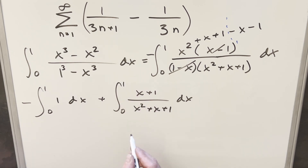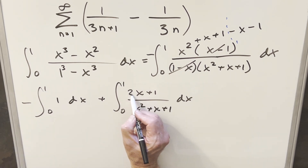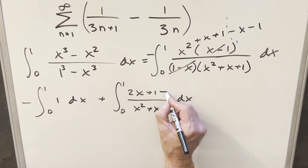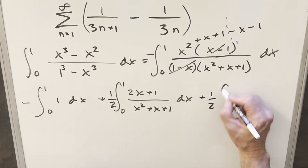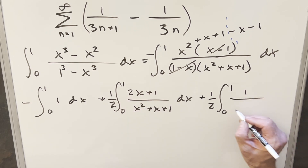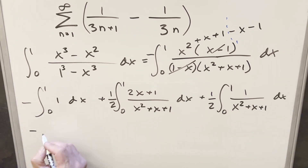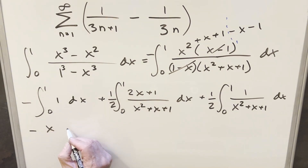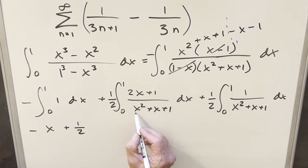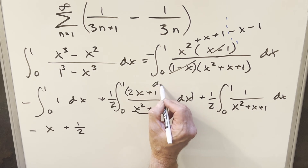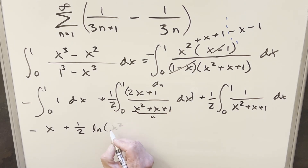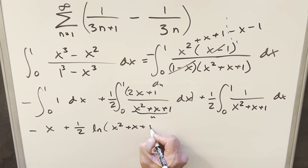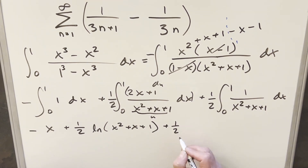For the second integral, I set up a u-substitution by multiplying and dividing by 2, making the numerator 2x plus 2. Writing 2 as 1 plus 1, I break off the extra 1 to create a third integral, bringing a factor of one half in front of each. The integral with 2x plus 1 in the numerator is a natural log: it becomes (1/2) times natural log of (x squared plus x plus 1), dropping absolute value since the denominator is always positive between 0 and 1.